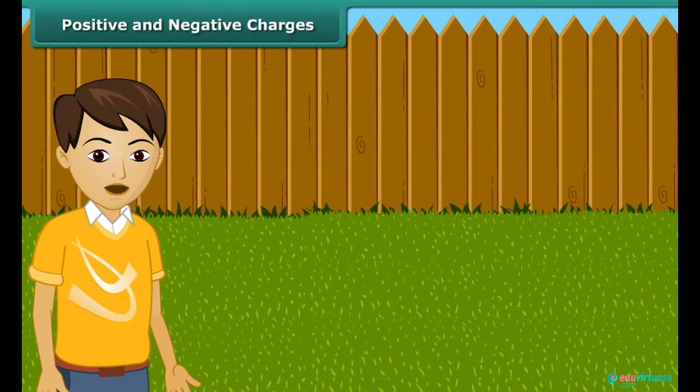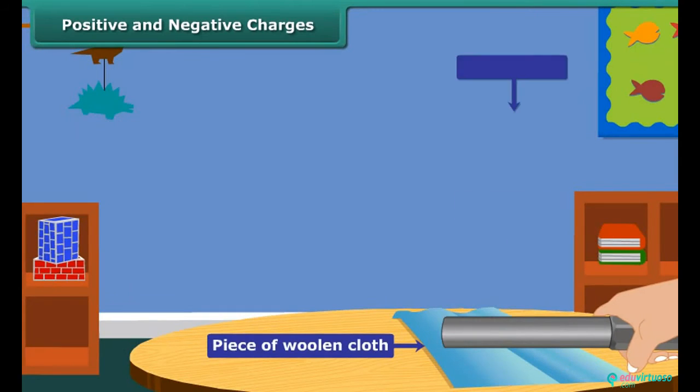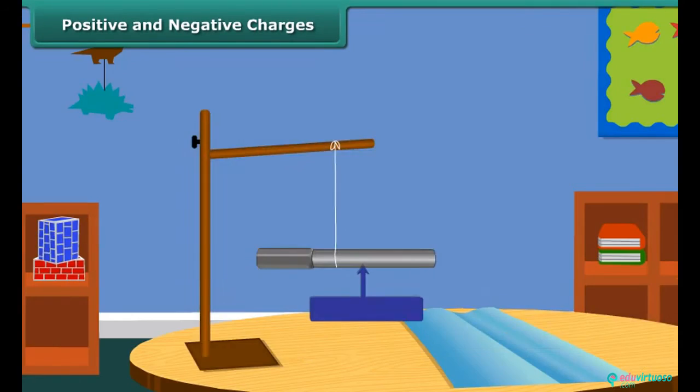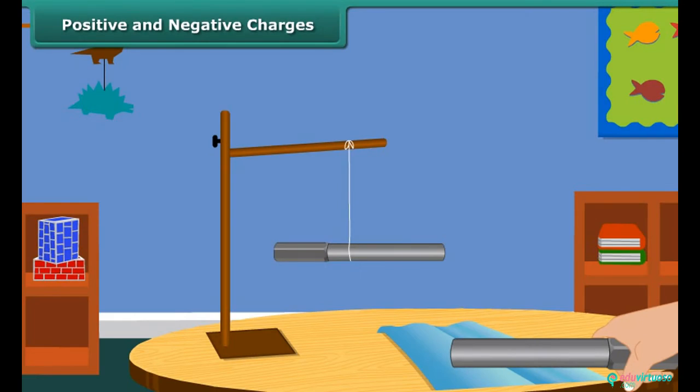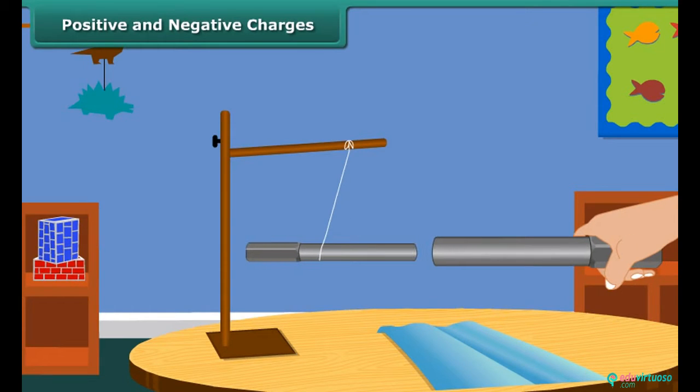Let us perform an activity to understand positive and negative charges. Take an ebonite rod and rub it with a piece of woolen cloth. Now suspend the rod by tying a thread through its middle. Now charge another ebonite rod in the same way and bring it close to the suspended rod.